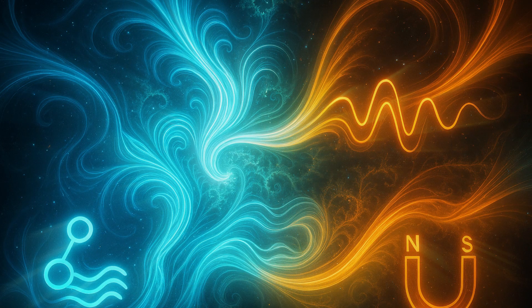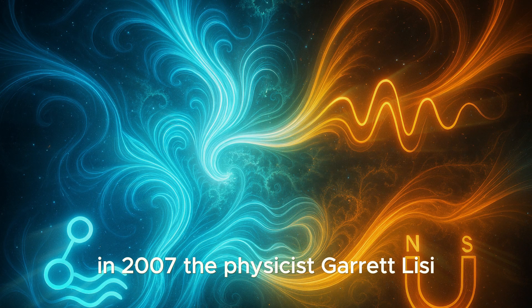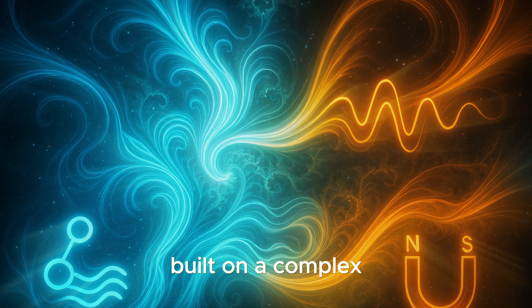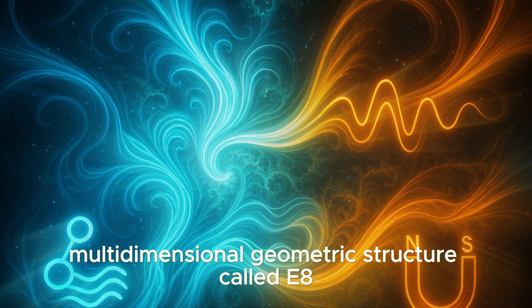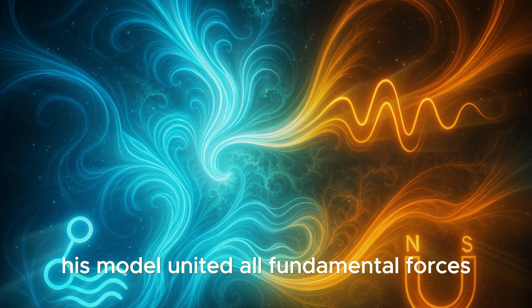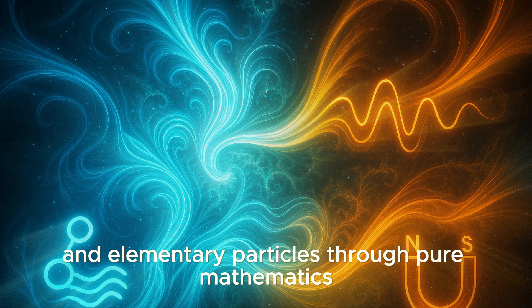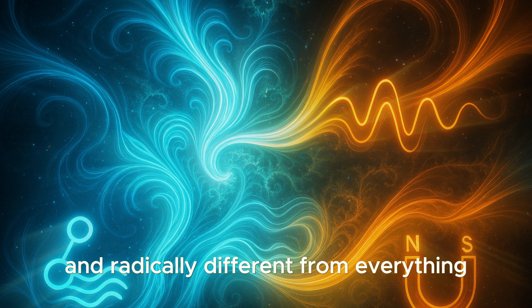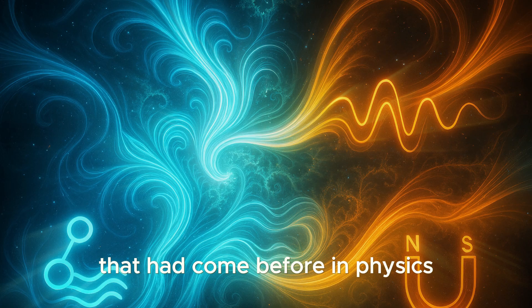In 2007, the physicist Garrett Lisi proposed a bold theory of everything built on a complex, multidimensional geometric structure called E8. His model united all fundamental forces and elementary particles through pure mathematics. Beautiful, elegant, and radically different from everything that had come before in physics.